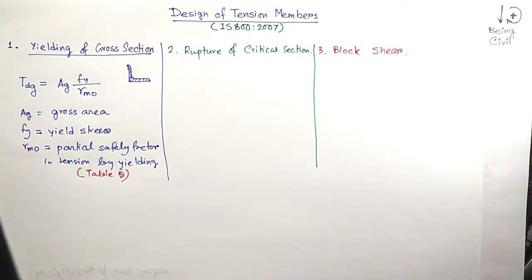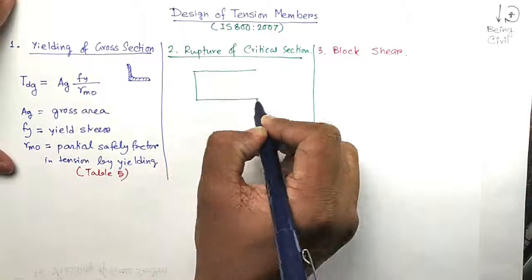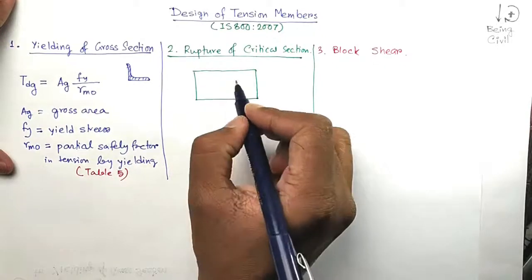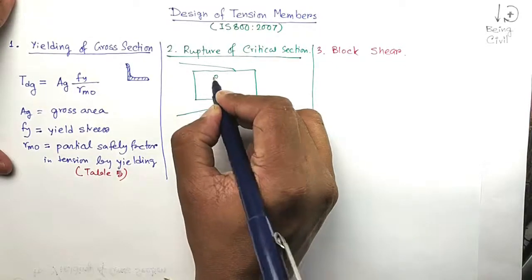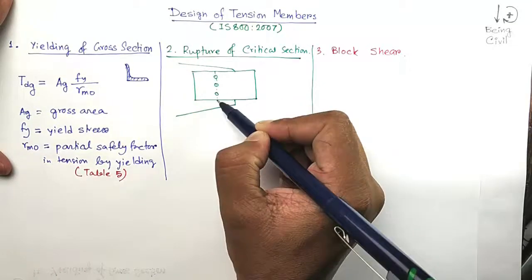Now, coming to the rupture of critical section. Suppose I have a plate like this and it is connected to a gusset with some bolts. So the member can fail through this section.